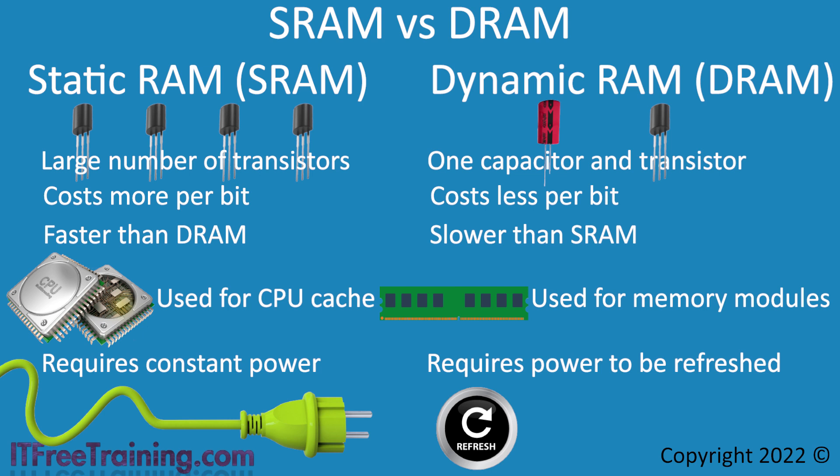Both these RAM types are what is referred to as volatile memory. Volatile memory refers to memory that if power is lost, the data is lost. However, some memory keeps its data even when it is not powered — this memory is referred to as non-volatile, meaning it keeps its data when power is switched off.